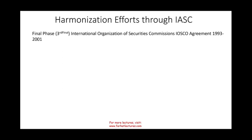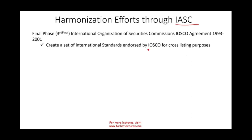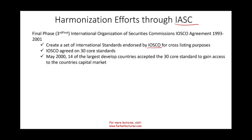The third stage, from 1993 to 2001, is known as the International Organization of Securities Commissions Agreement. The IASC worked with the International Organization of Securities Commissions to solve the problem of cross-listing — helping a US company list in Europe or a European company list in the US. They created a set of 30 core international standards endorsed by this securities organization for cross-listing purposes. In May 2014, the largest developed countries accepted these 30 core standards to gain access to capital markets, meaning as long as you use those standards, you can cross-list.